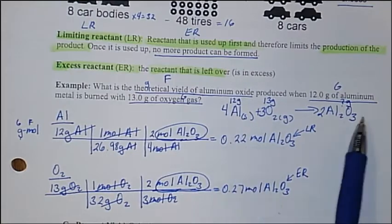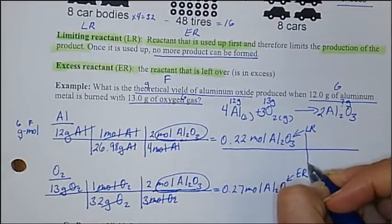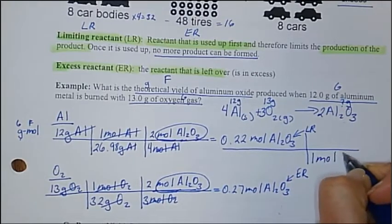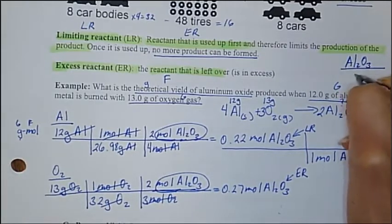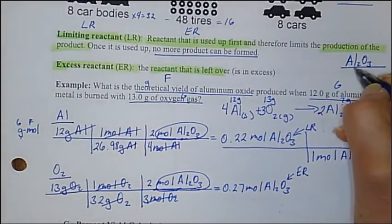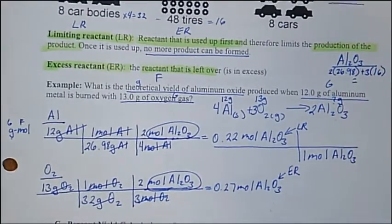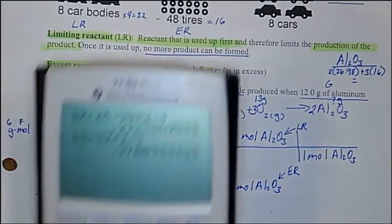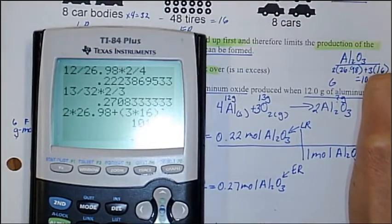Remember, theoretical yield is in grams. So now we can convert the moles into grams. Use your periodic table — I always want to see how you did your work. For aluminum oxide: 2 times 26.98 plus 3 times 16 gives us 101.96 grams per mole.